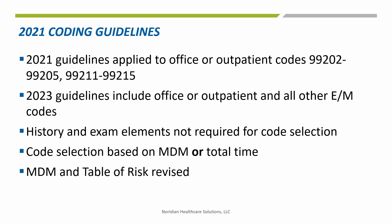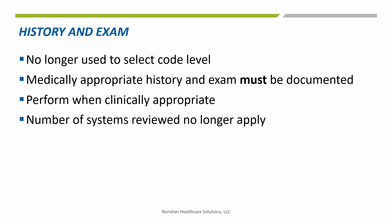The revisions also defined important terms such as independent historian. For 99202 through 99215, office or other outpatient services, documentation must include a medically appropriate history and/or physical examination when performed. The nature and extent of the history and/or physical examination is determined by the treating physician or other qualified healthcare professional reporting the service. The care team may collect information. The patient or caregiver may also supply information directly, such as through a portal or questionnaire. This must be reviewed by the reporting physician or other qualified healthcare professional.